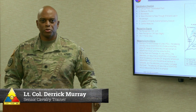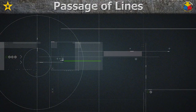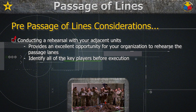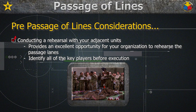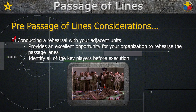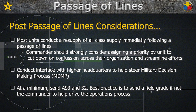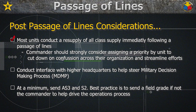A few considerations for your organization pre and post execution of a passage of lines. Pre: consider conducting a rehearsal with your adjacent units, which provides an excellent opportunity to rehearse the passage lanes and identify all the key players before execution. Post passage of lines: most units conduct a resupply of all classes of supply immediately following a passage of lines — commanders should strongly consider assigning a priority by unit to cut down on confusion and streamline efforts. Additionally, this is a great time to conduct interface with your higher headquarters to help steer MDMP; at a minimum, consider sending your AS3 and S2, and a best practice is to send a field grade officer, if not the commander, to help drive the operations process.